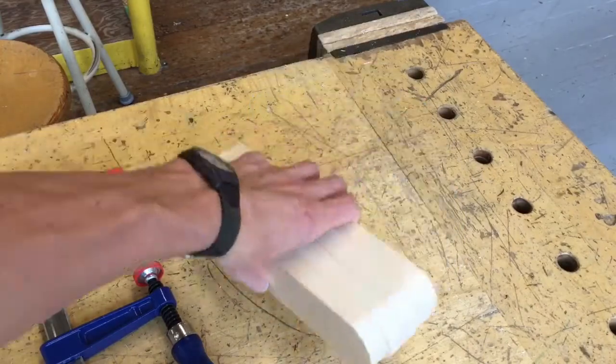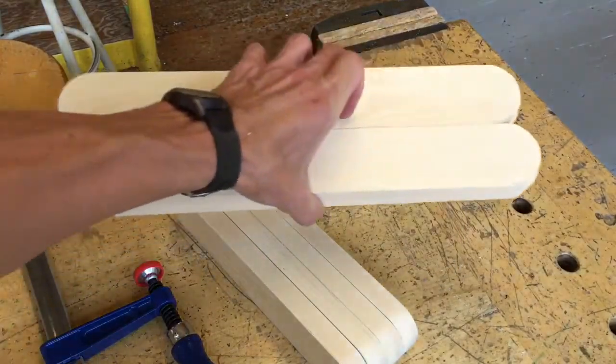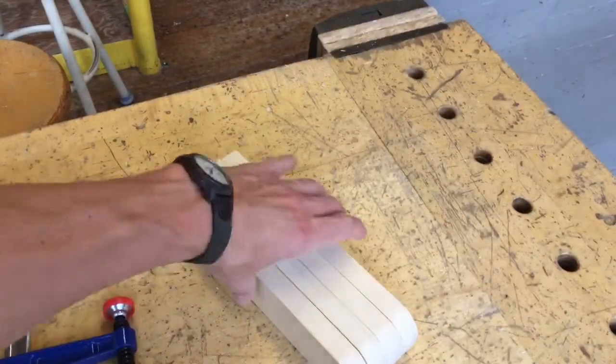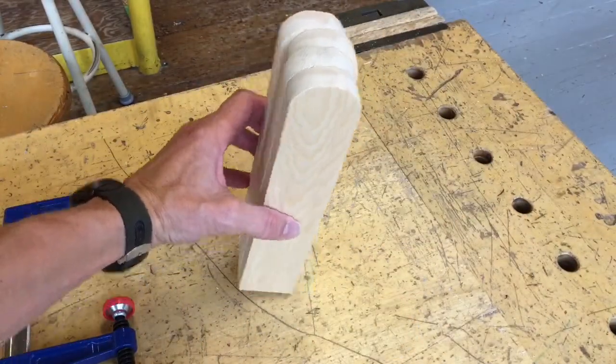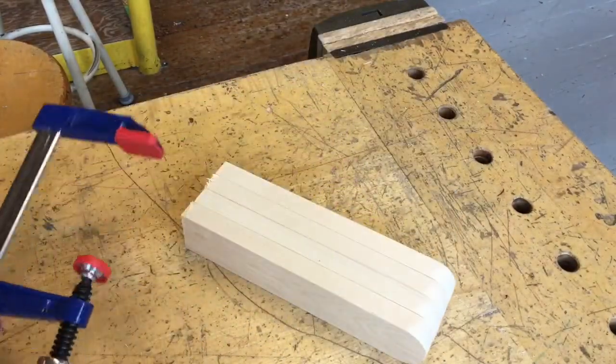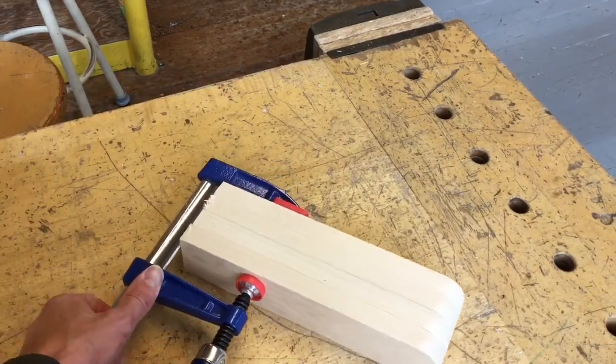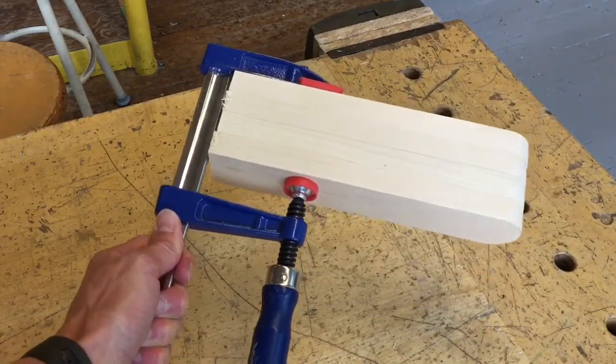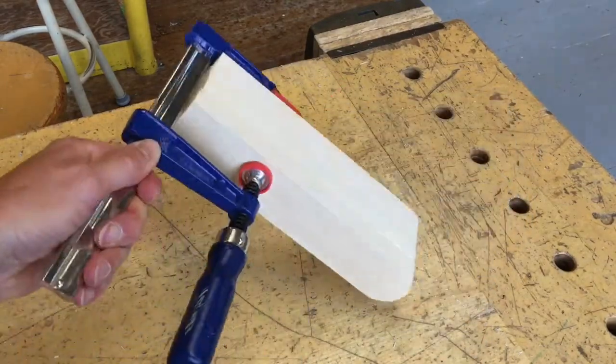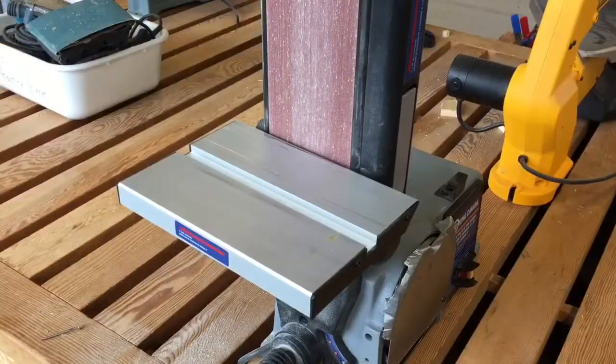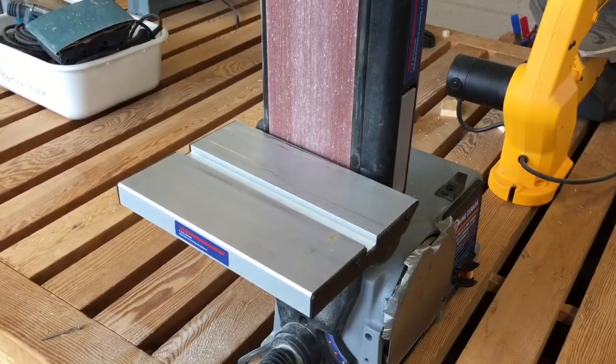Once you're done with your preliminary sanding and rounding of the short pieces and both ends of the long pieces, stack these together, make sure the ends are flush, and clamp them together like this. Then we're going to re-sand them to make sure they're all exactly the same.